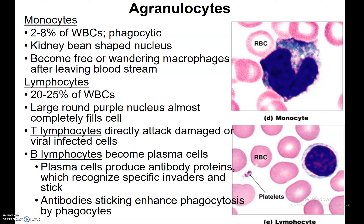The agranulocytes are your monocytes and lymphocytes. Monocytes — not very many of those — are also phagocytic. They have a weird kidney bean-shaped nucleus, maybe kind of heart-shaped. These guys wander around under your tissues after they leave the bloodstream. They can squeeze out of capillary beds and get into the dermal layer of your skin.